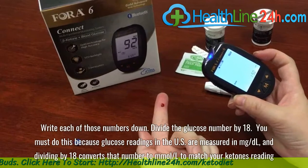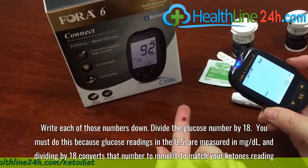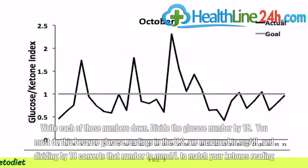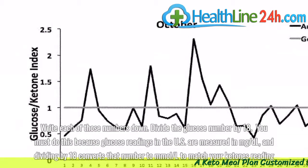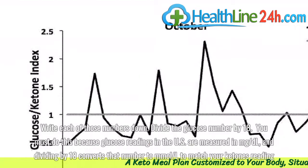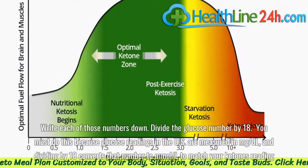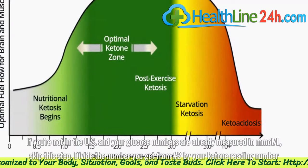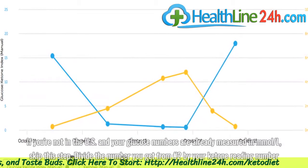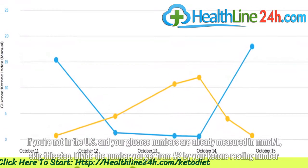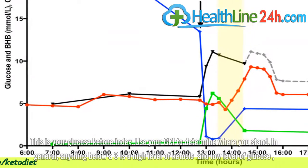Write each of those numbers down. Divide the glucose number by 18. You must do this because glucose readings in the U.S. are measured in milligrams per dL, and dividing by 18 converts that number to millimoles per liter to match your ketones reading. If you are not in the U.S. and your glucose numbers are already measured in millimoles per liter, skip this step. Divide the number you get by your ketone reading number. This is your glucose ketone index.